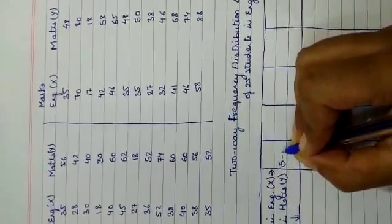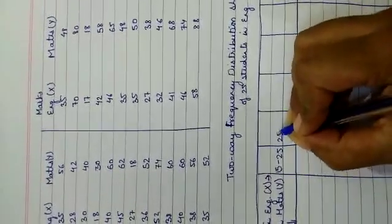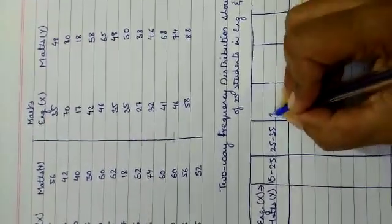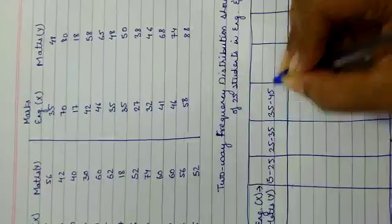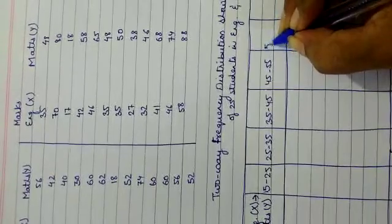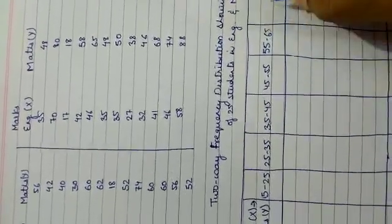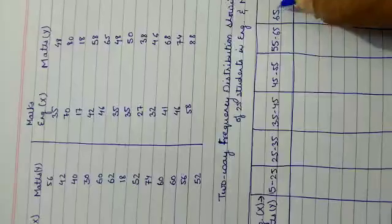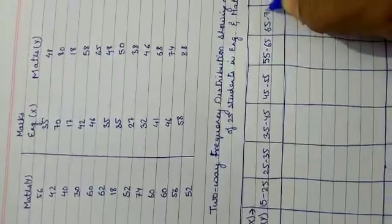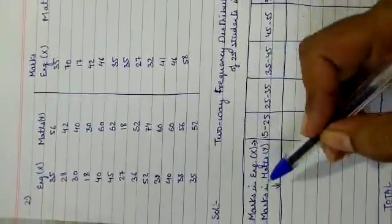So the X class intervals are: 15–25, 25–35, 35–45, 45–55, 55–65, and 65–75. The last column is the total.